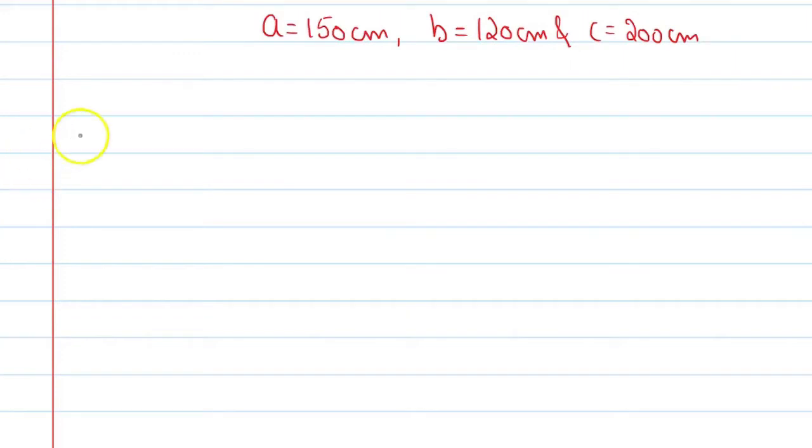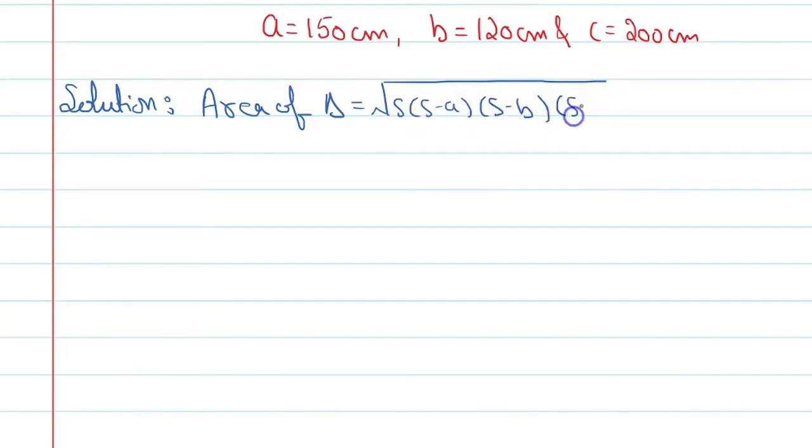Look at the second formula which we have to remember. Solution: area of triangle is equal to under root s times (s minus a) times (s minus b) times (s minus c).